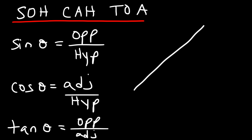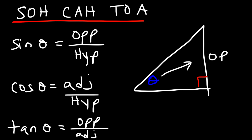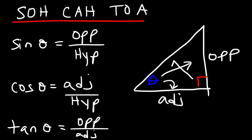Let's say we have a right triangle. This is a 90-degree angle, and this is the angle theta. Opposite to theta is the side on the right. Adjacent to it is the side next to the angle. And across the 90-degree angle is the longest side of the triangle — that is the hypotenuse.